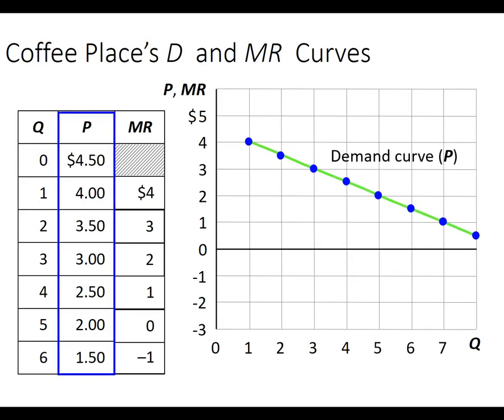So we're going to graph it here. First is the demand curve — this is quantity and price. For a monopolist, their marginal revenue is below the demand curve. The monopolist is the single seller. If the marginal cost was $2 per cappuccino, remember profit maximization says I produce up until marginal cost equals marginal revenue. That happens at three units. Now I'm a monopolist, so I don't have to charge $2 — I can charge what customers are willing to pay. I follow the quantity up to the demand curve and charge $3 per cup of coffee.